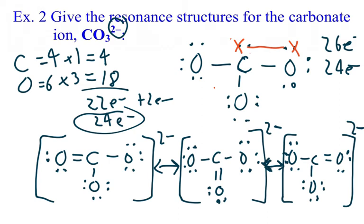This molecule has three different resonance structures. You can either form the double bond on the left side, between the carbon in the middle and the bottom oxygen, or on the right side — three possible resonance structures. And don't forget, since it's a polyatomic, put it in a bracket and put the charge on the top right-hand corner.